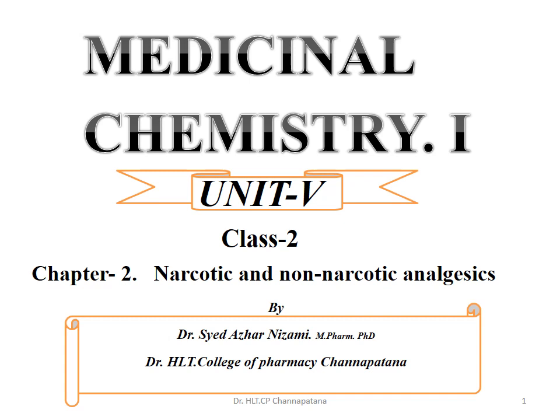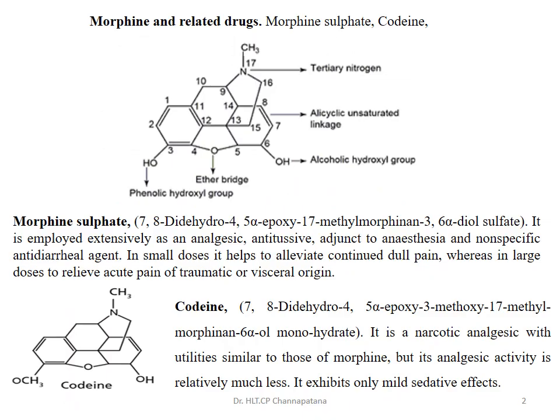Welcome to Class 2 of Medicinal Chemistry 1, Unit 5, Chapter 2: narcotic and non-narcotic analgesics. In the previous class, we discussed what narcotic drugs are, how they are obtained, how they act, and what are the uses and side effects of narcotic drugs. Today, we will discuss some classes of narcotic drugs.